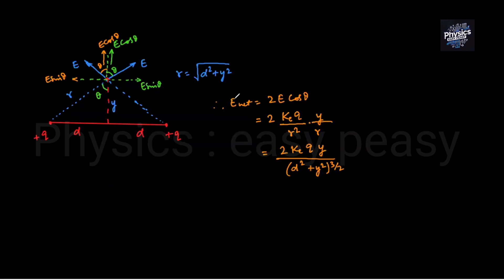When the electric field is maximum, what is the value of y? For the field to be maximum or minimum, the derivative of the function is zero. We differentiate the electric field with respect to y and equate it with zero.